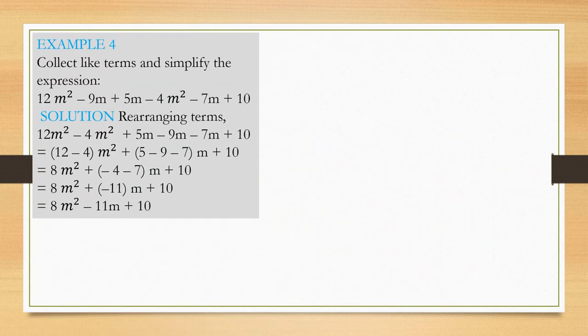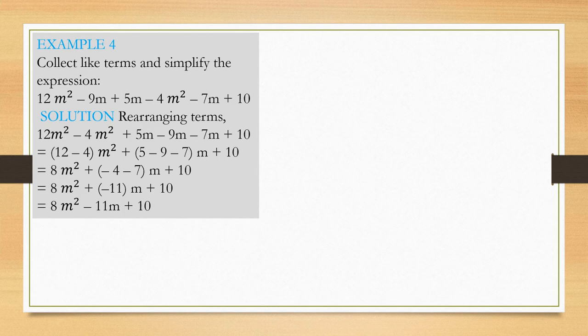Example 4: collect like terms and simplify the expression. Rearranging by taking all like terms together: 12m² and minus 4m² are combined; 5m, minus 9m, and minus 7m are combined; and the constant term 10 remains. Therefore, you get 8m² plus negative 11m plus 10, that is 8m² minus 11m plus 10.